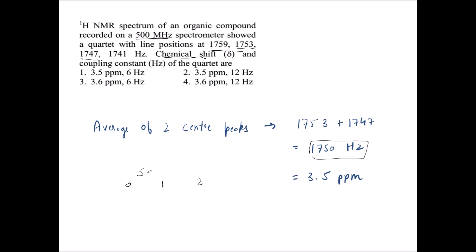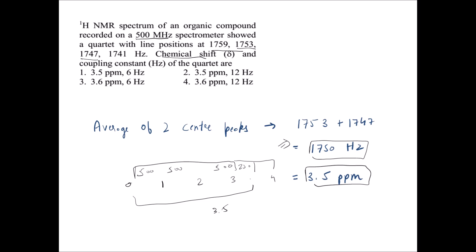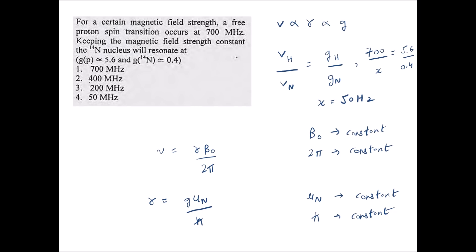From 0 to 3 ppm accounts for 1500 Hz. Since the signal is at 1750 Hz, we need 250 more Hz beyond 3 ppm. Half of the next 500 Hz interval gives 3.5 ppm — so the chemical shift is 3.5 ppm. The coupling constant for the quartet is the gap between two adjacent peaks: 1747 − 1741 = 6 Hz. The correct answer is 3.5 ppm and 6 Hz.